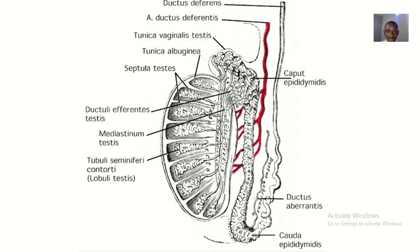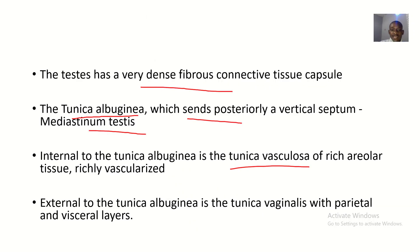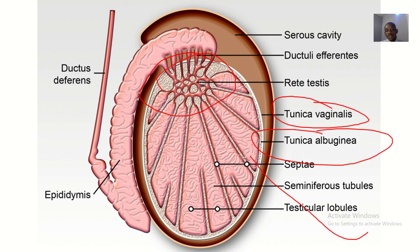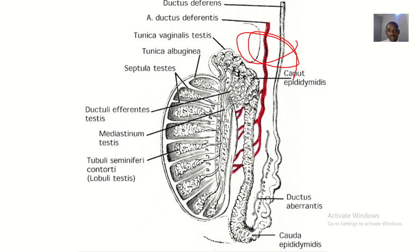This is the septum, and this septum is from the tunica albuginea. So the tunica albuginea sends posteriorly a vertical septum called the mediastinum testis. Internal to the tunica albuginea is the tunica vasculosa, which is a rich areolar tissue and is highly vascularized. This is just like an embroidered image — they are not showing the blood vessels, but just know that it is highly vascularized.